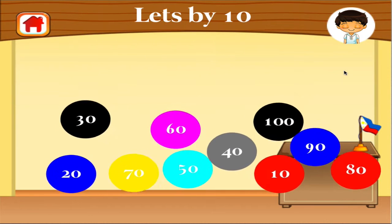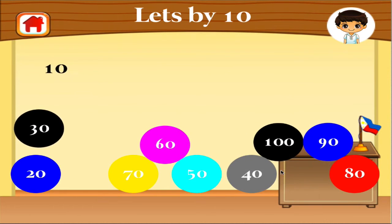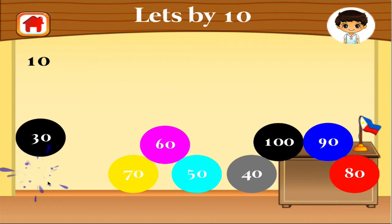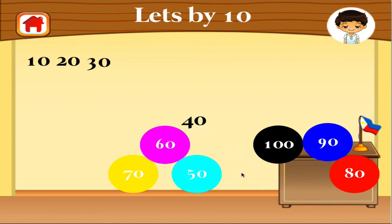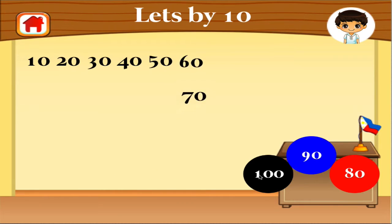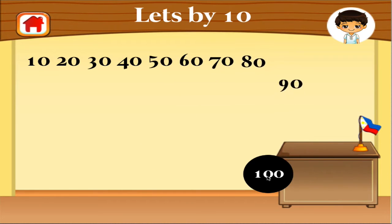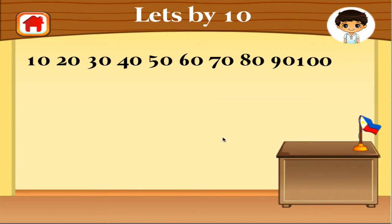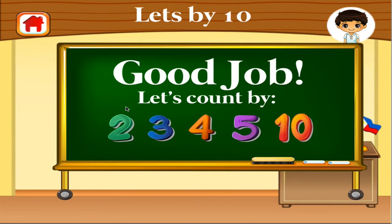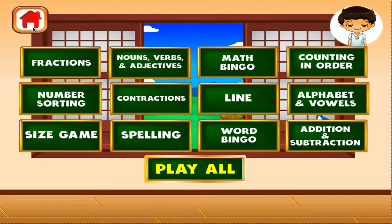Let's count by ten. Ten. Twenty. Thirty. Forty. Fifty. Sixty. Seventy. Eighty. Ninety. One hundred. Fantastic!